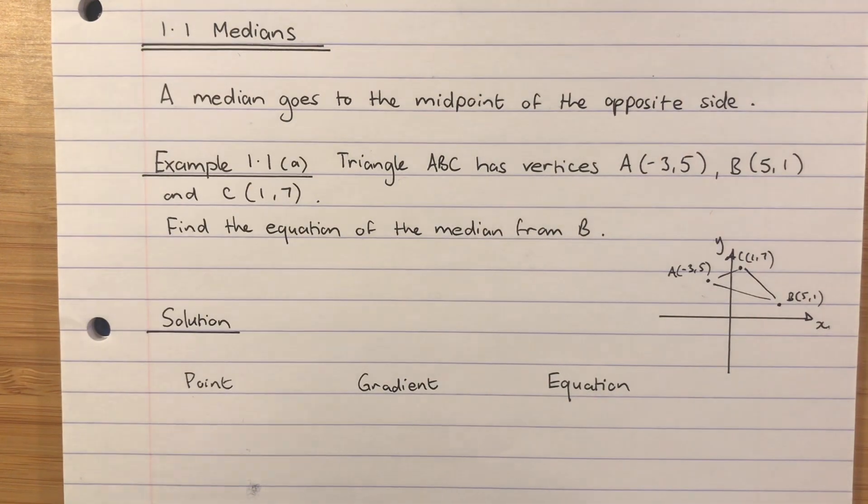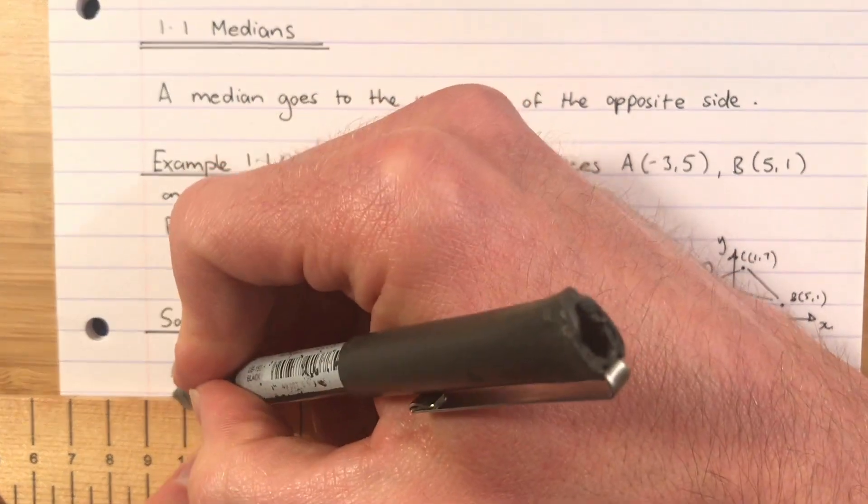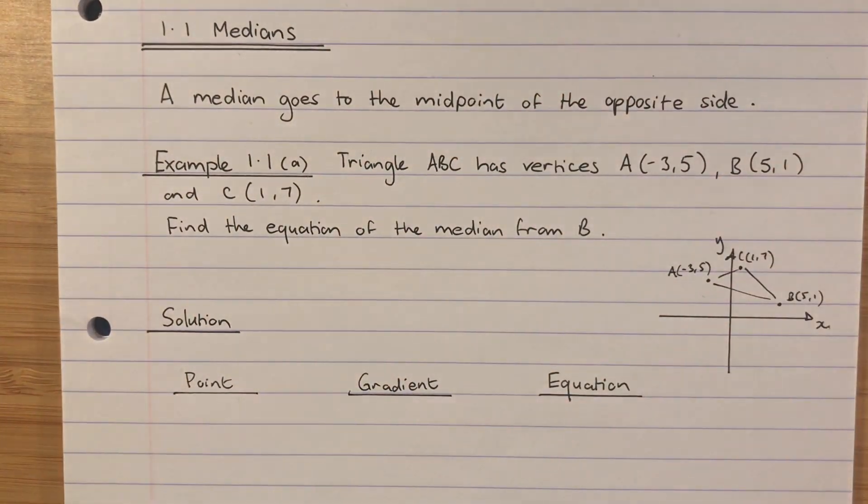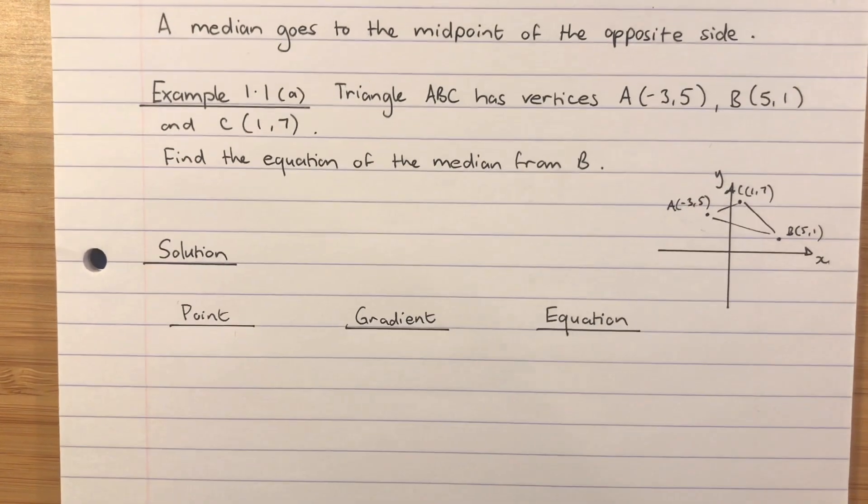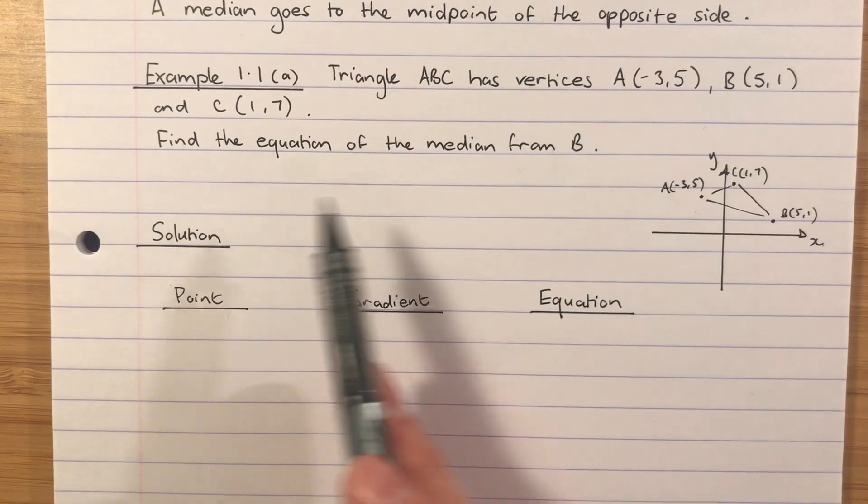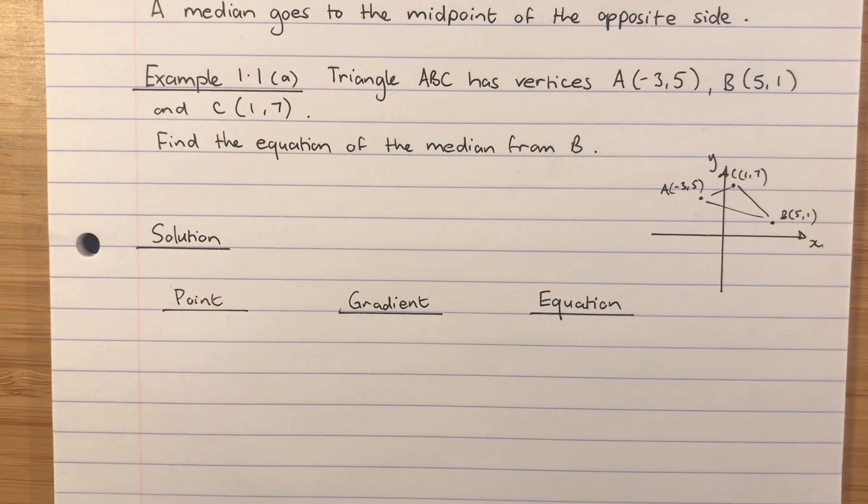The three headings are Point, Gradient, and finally we will work out the Equation. P, G, E is sufficient just for the notes, but we're going to write things out in full. Referring back to the question, it's the equation of the median from B.